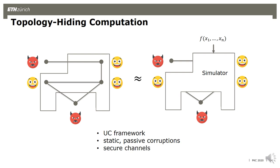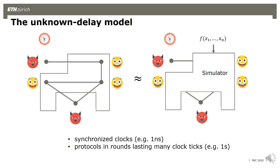To define what it means to deliver messages with unknown unbounded random delays, we need a notion of delay and a notion of time. We add a clock functionality which synchronizes parties. This is the more or less standard clock functionality by Katz et al., and it measures what we call an atomic clock tick — think of it as the smallest measurable amount of time, for example one nanosecond. Protocols will run in rounds and a round will last many clock ticks — a protocol does something only every R clock ticks, where R is sufficiently large to account for computation time.